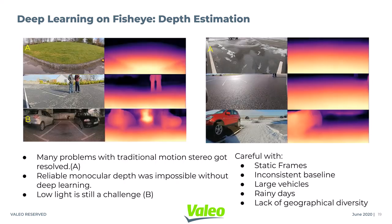Using deep learning, we are able to solve many problems associated with traditional motion stereo, like varying road surfaces, depth of moving objects, or moving objects with smooth surfaces. But low light still remains a challenge — you can see some ghost depths in figure B. If you are working on depth estimation, be careful with static frames, inconsistent baseline, large moving vehicles, rainy conditions, and lack of geographical diversity in your dataset.